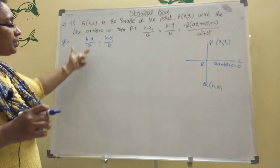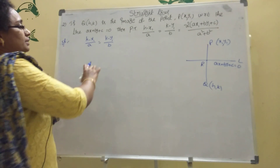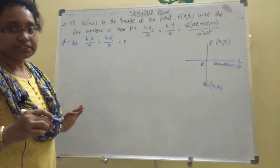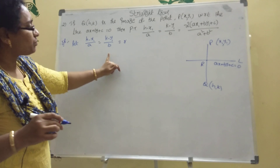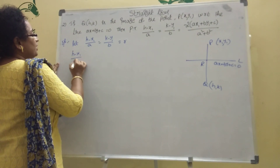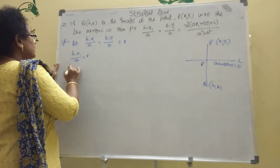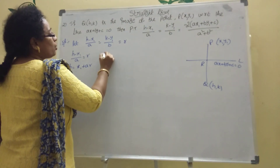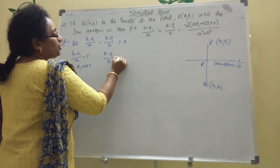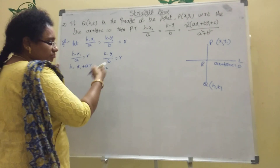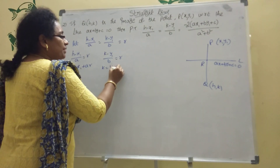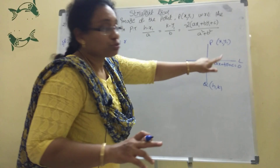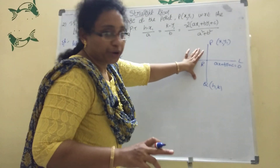Set (h − x₁)/a = (k − y₁)/b = r. Then h = x₁ + ar and k = y₁ + br. These are the H and K values in terms of parameter r.